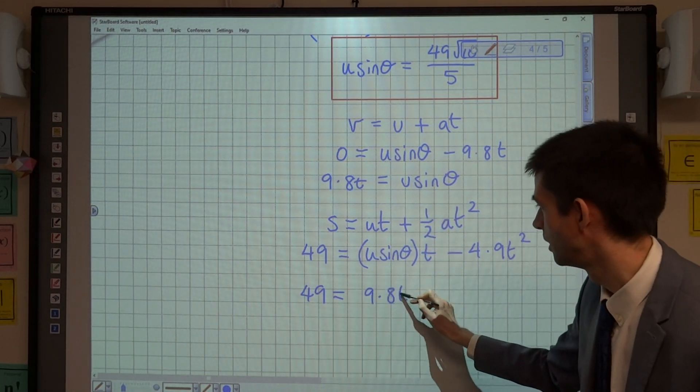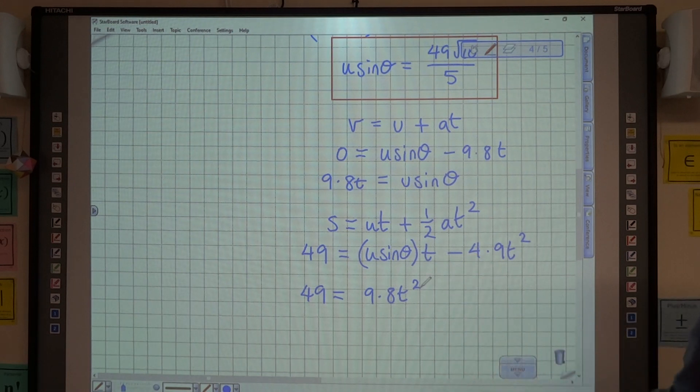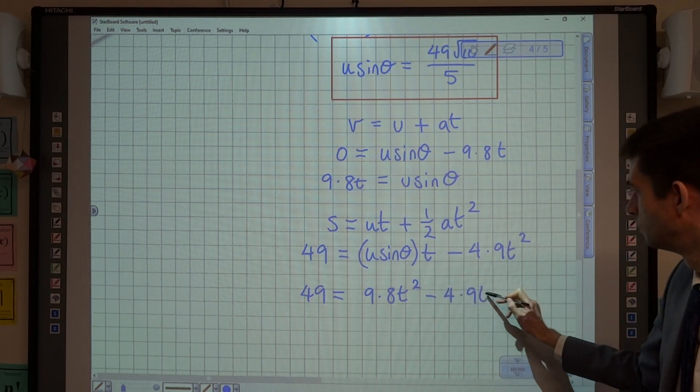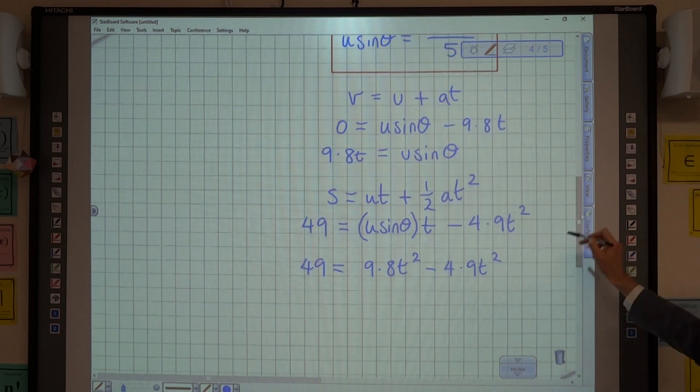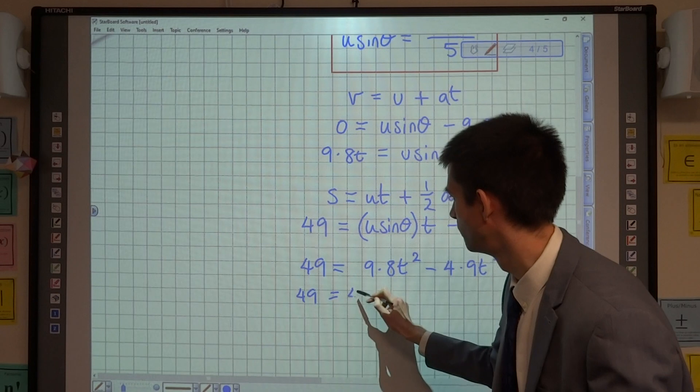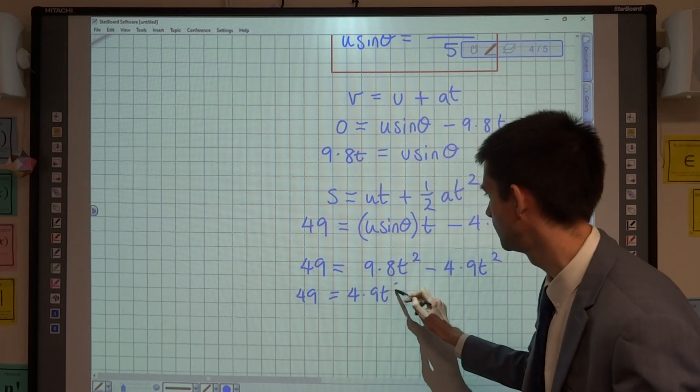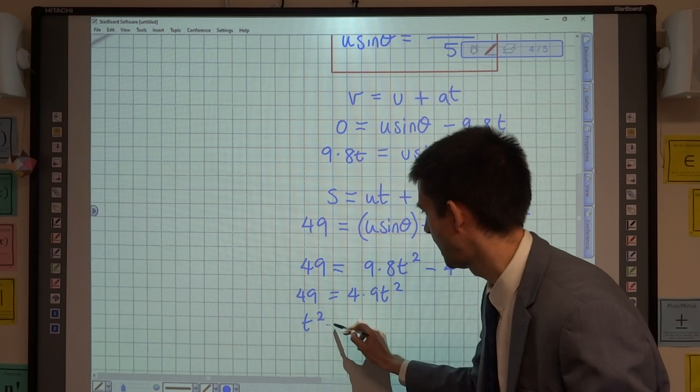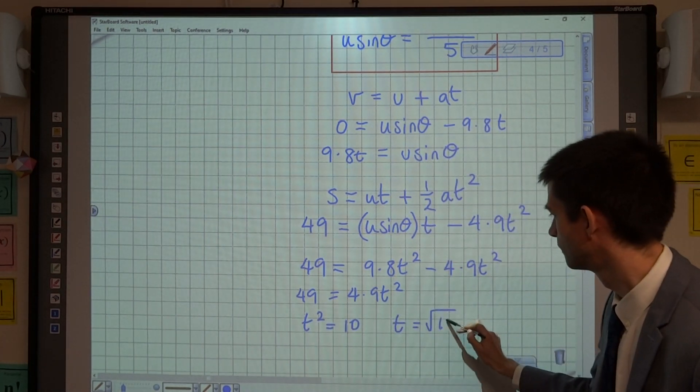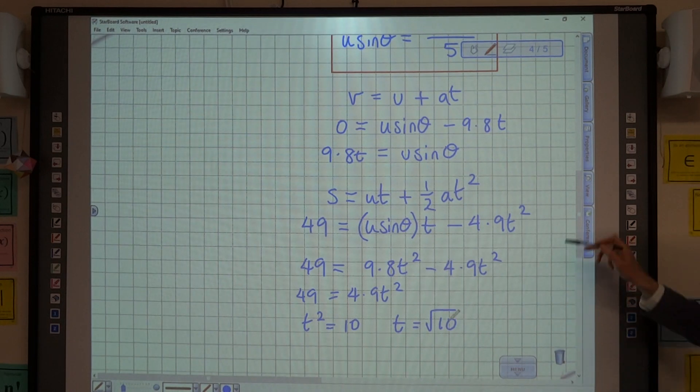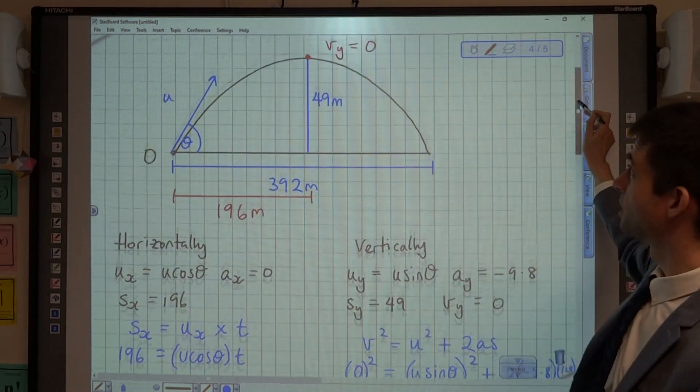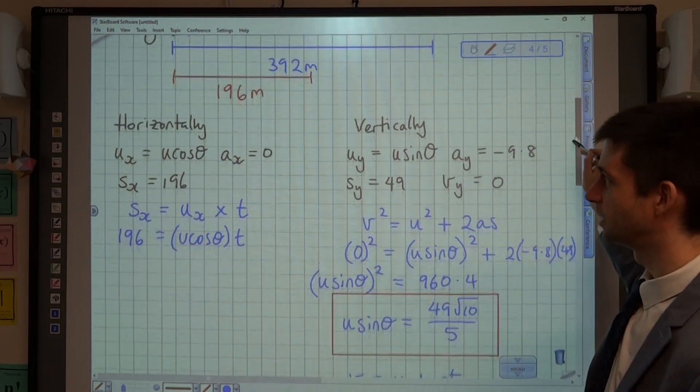Minus 4.9 t squared, which now means that 49 is equal to 4.9 t squared, and the t squared is equal to 10, which means that the time is root 10. And that's the time that it's taken to get to the greatest height there. So t equals root 10.